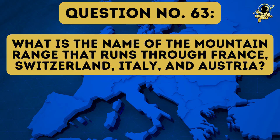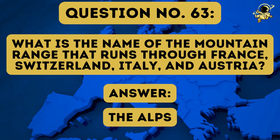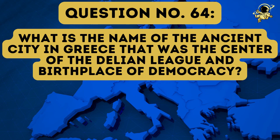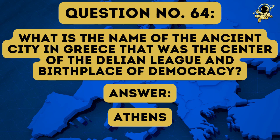Question number sixty-three: What is the name of the mountain range that runs through France, Switzerland, Italy and Austria? And the answer to question number sixty-three is something we had before — the answer is still the Alps. What is the name of the ancient city in Greece that was the center of the Delian League and birthplace of democracy? The answer to question number sixty-four is Athens.